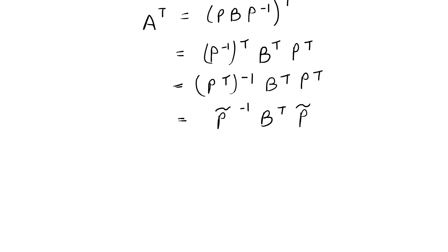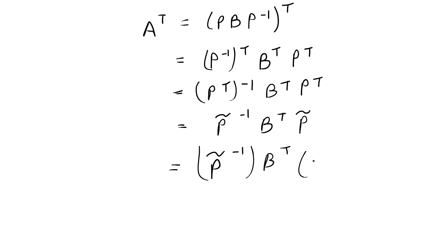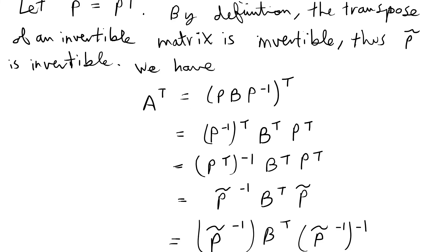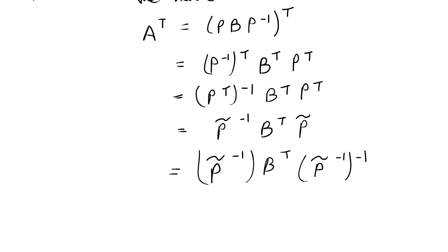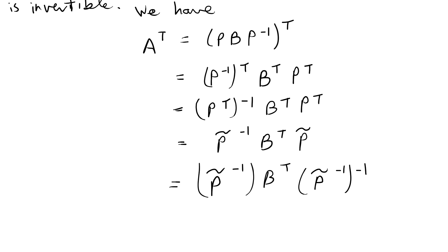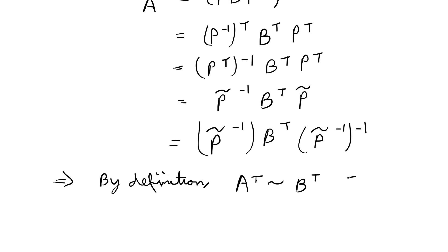We rewrite this so that P̃ inverse plays the role of P and P̃ plays the role of P inverse — specifically, (P̃⁻¹)⁻¹ equals P̃. By doing this, we now have A transpose in the correct similarity form, and we can conclude that A transpose is similar to B transpose. And we are done with this problem.